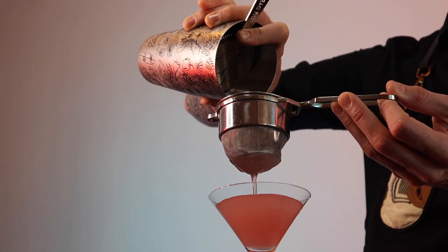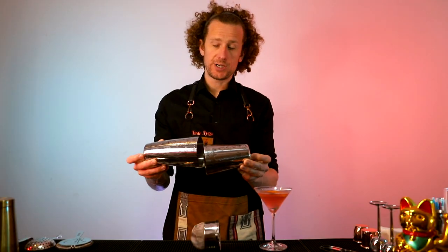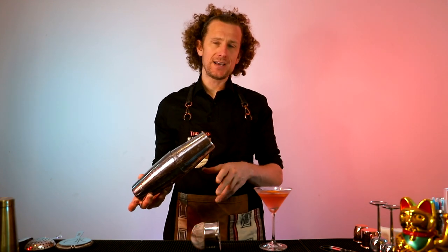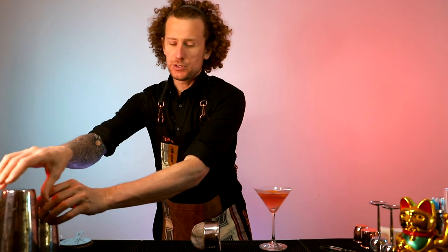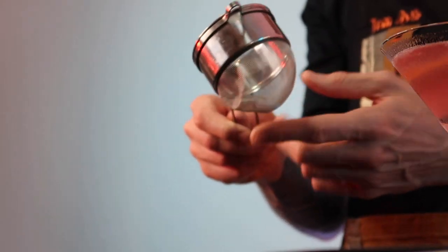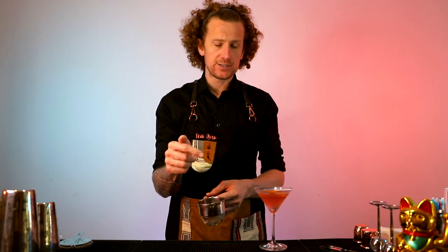Now when you shake a cocktail with ice in your cocktail shaker you're breaking up the ice and you're diluting the cocktail. So if you strain without a fine strainer you're going to have all these tiny little ice crystals on top of your Cosmopolitan.